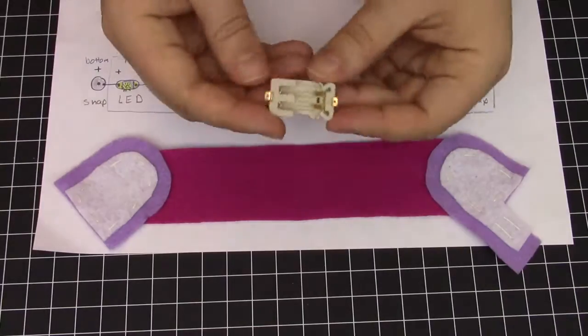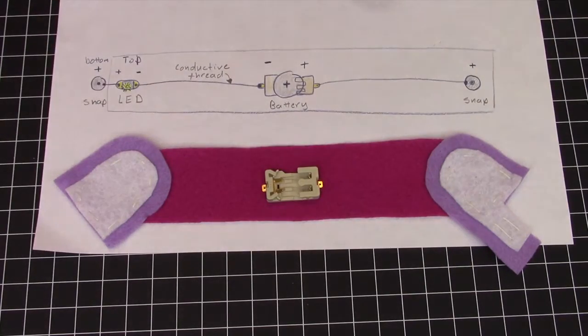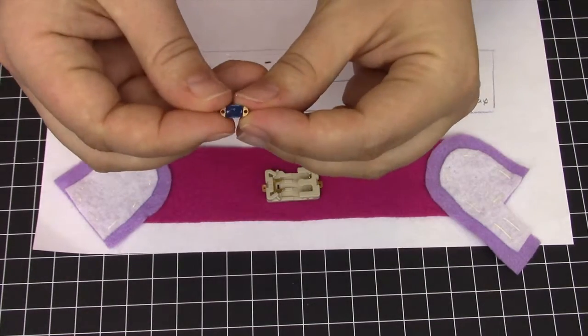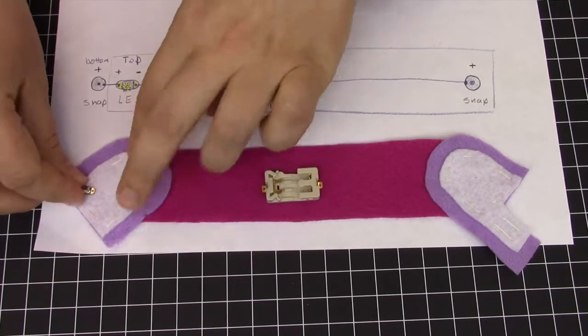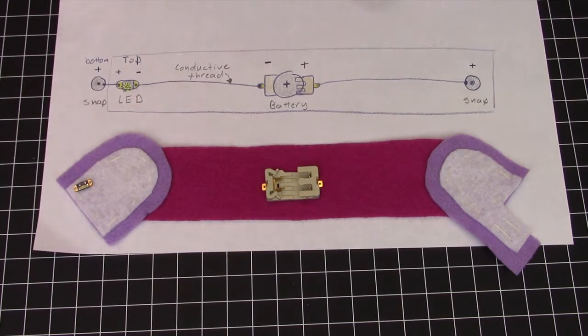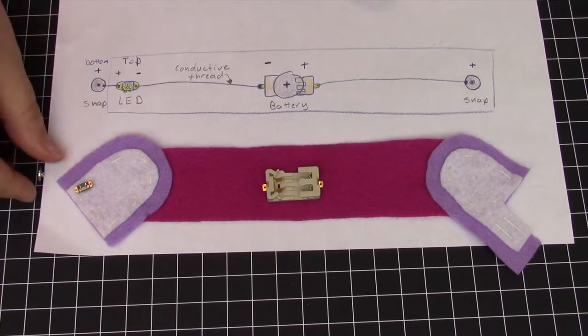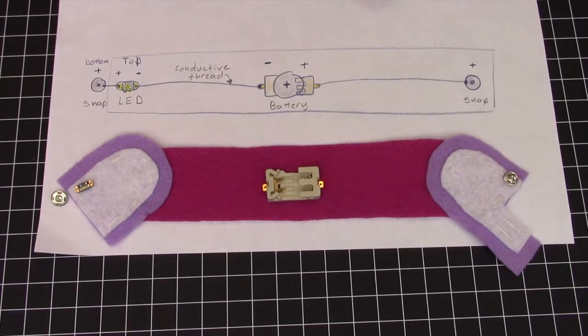Now we will attach the electronic components. There's the battery holder in the center, and the LEDs will go on one end. Notice the positive and negative. And then we'll have a snap half on either end to create a switch.